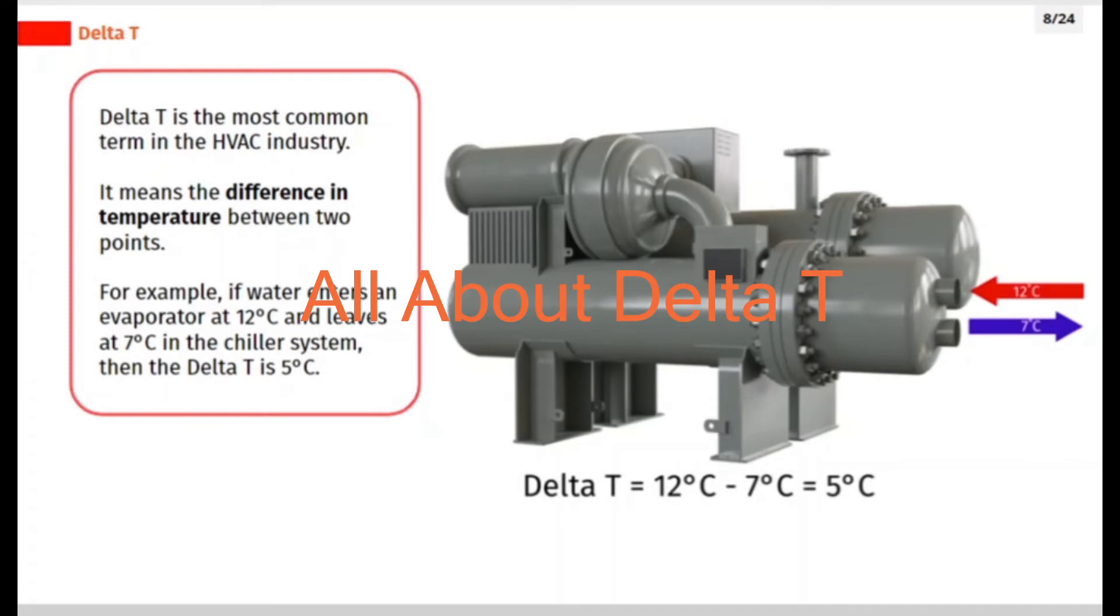Delta T is the most common term in the HVAC industry. It means the difference in temperature between two points. For example, if water enters an evaporator at 12 degrees Celsius and leaves at 7 degrees Celsius in the chiller system, then the delta T is 5 degrees Celsius.